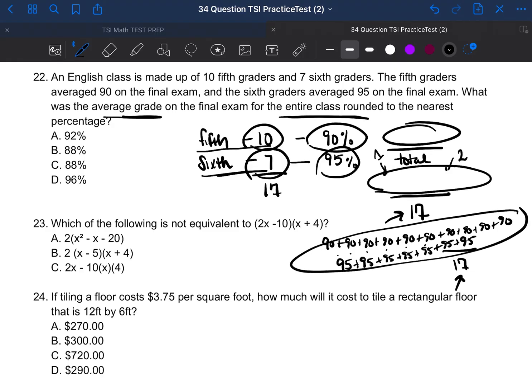So all of this is going to be added on the top divided by the total number of students, which is 17. Now, there's got to be a better way to write this. And there is. So we can write 90 times 10 plus 95 times 7. That's the same thing as writing 90 plus 90 plus 90 10 times and 95 plus 95 plus 97 times. So we're going to go ahead and write that over the number 17.